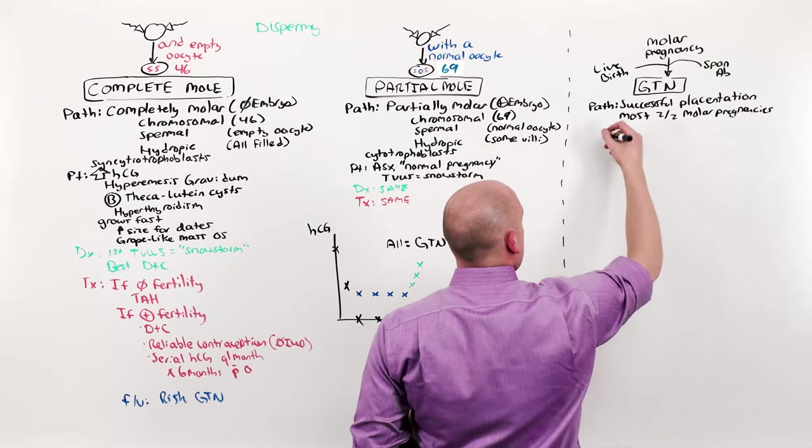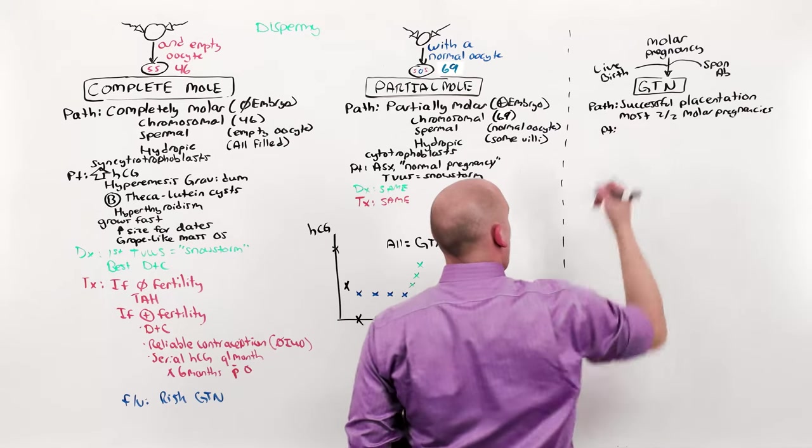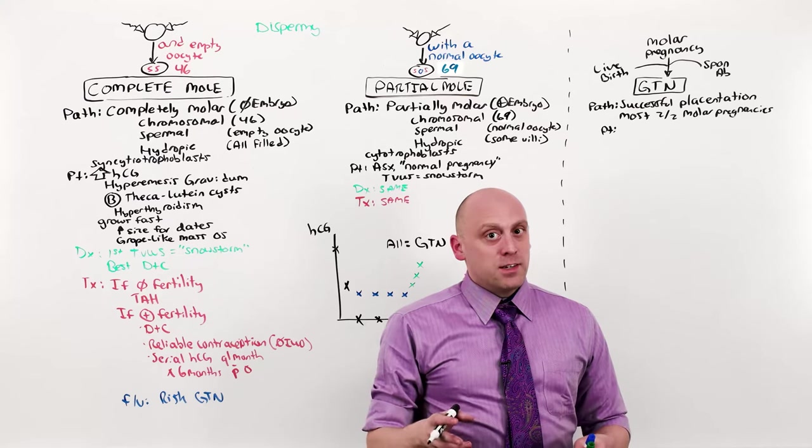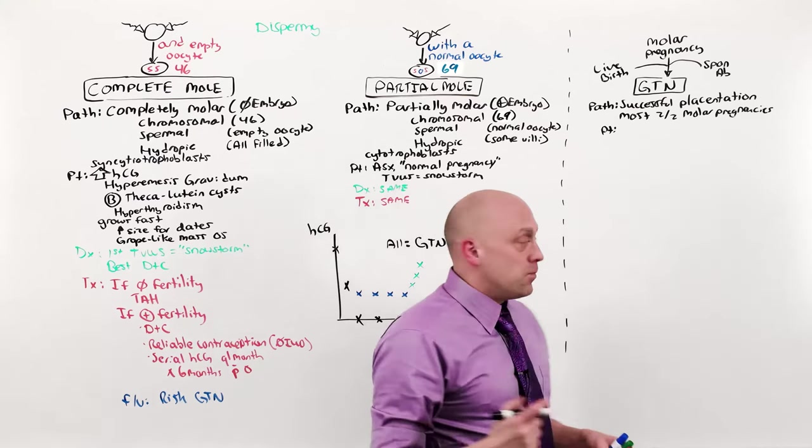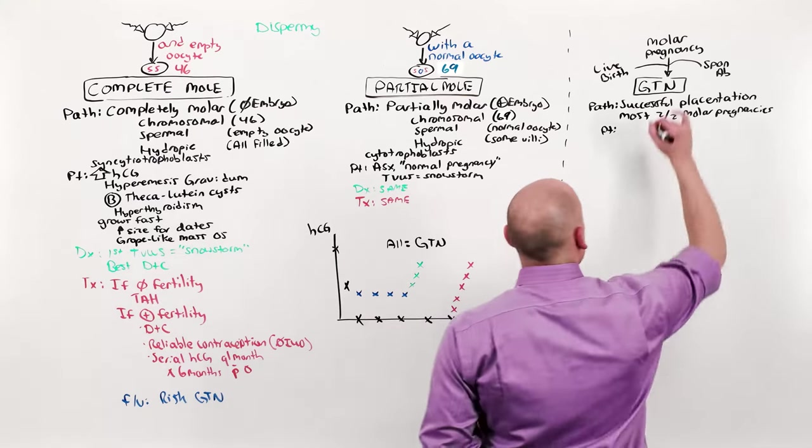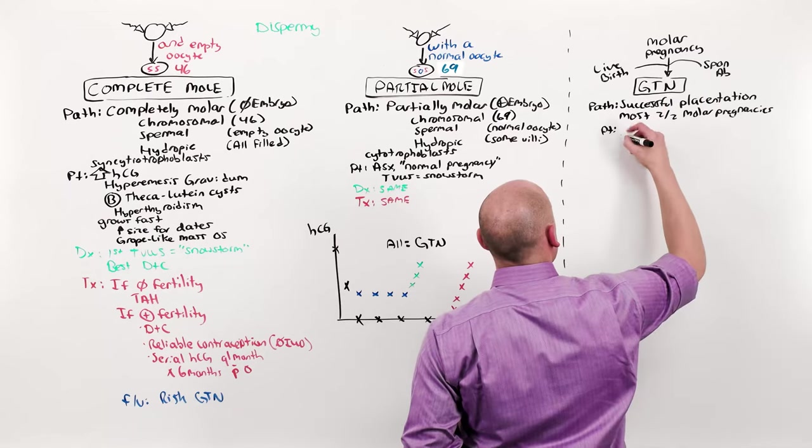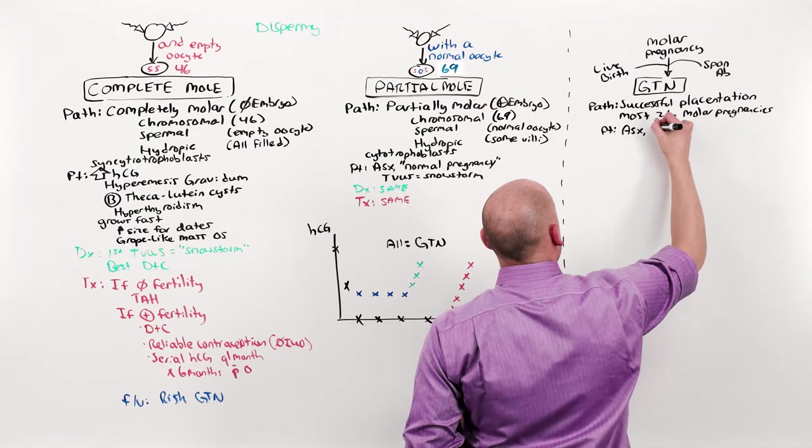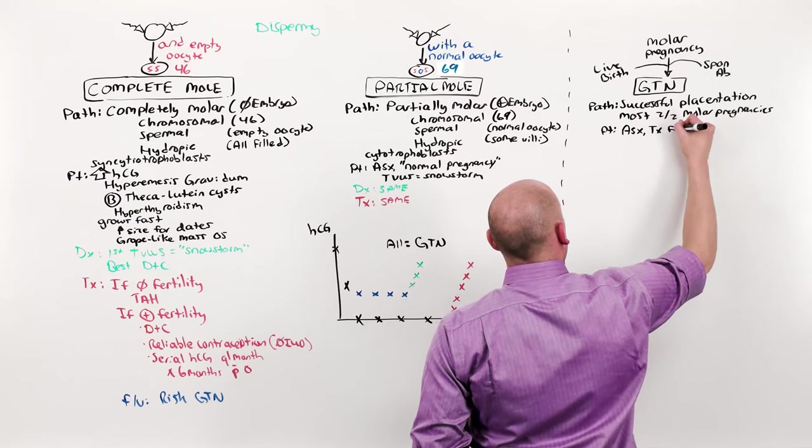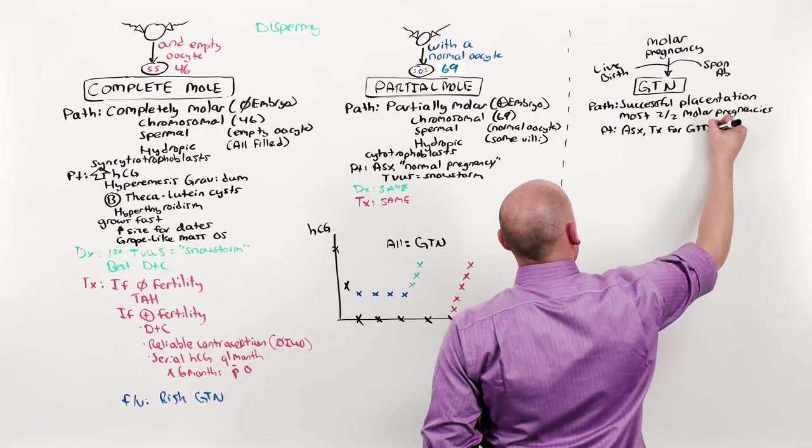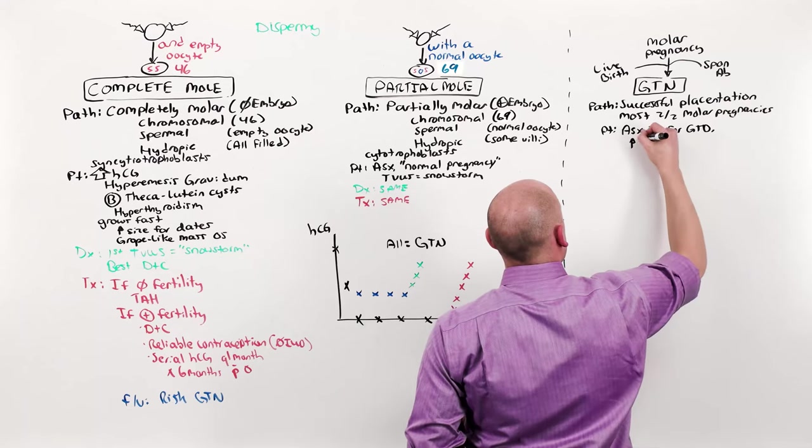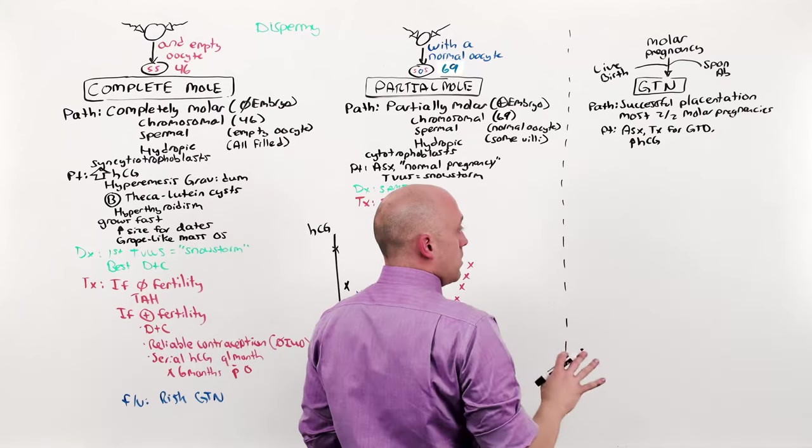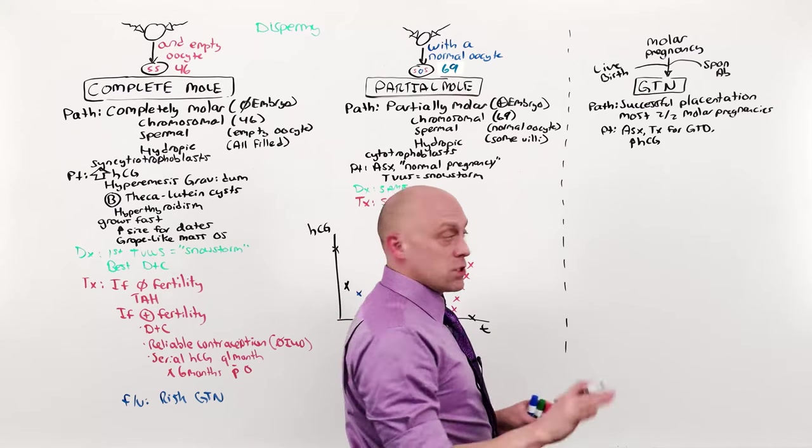Now, if it is secondary to a molar pregnancy and she's being treated, she's on reliable contraception and so the only way that an HCG can rise is if there's a GTN. So, most of the time, a GTN is going to be diagnosed in an asymptomatic patient being treated for GTD who has a rise in the HCG. That alone is enough to treat. No tissue is needed. No imaging is needed.